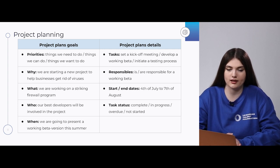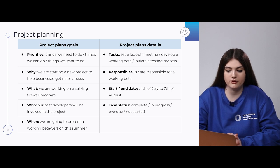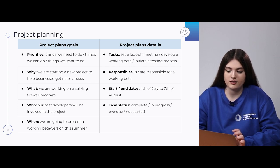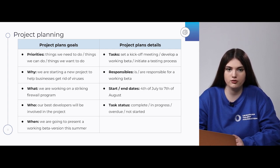We should fill the gaps with tasks, responsibles, start and end dates, and finally put a status for each task. For example, tasks can include: set a kick-off meeting, developing a working beta, or initiate a testing process. For responsibles: a name is or are responsible for a working beta. Start and end date: from 4th of July to 7th of August. The status of a task can be completed, in progress, overdue, or not started.